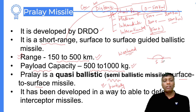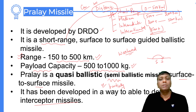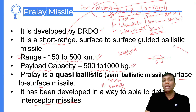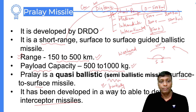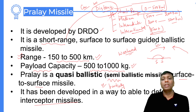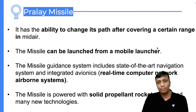One very interesting feature of the Pralay missile is that it has the ability to defeat interceptor missiles. Against any incoming missile, we can use the Pralay missile to defeat interceptors. If any missile is coming towards you, the Pralay can be used in an interceptor-type role. This is a very unique feature of the Pralay missile.